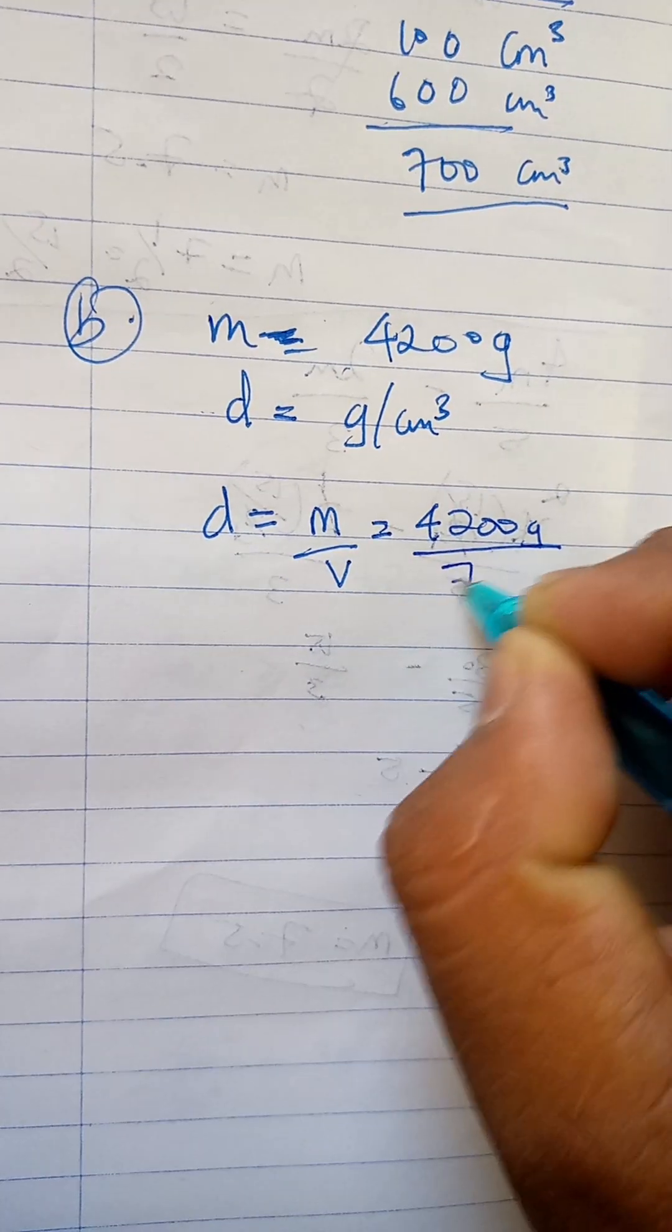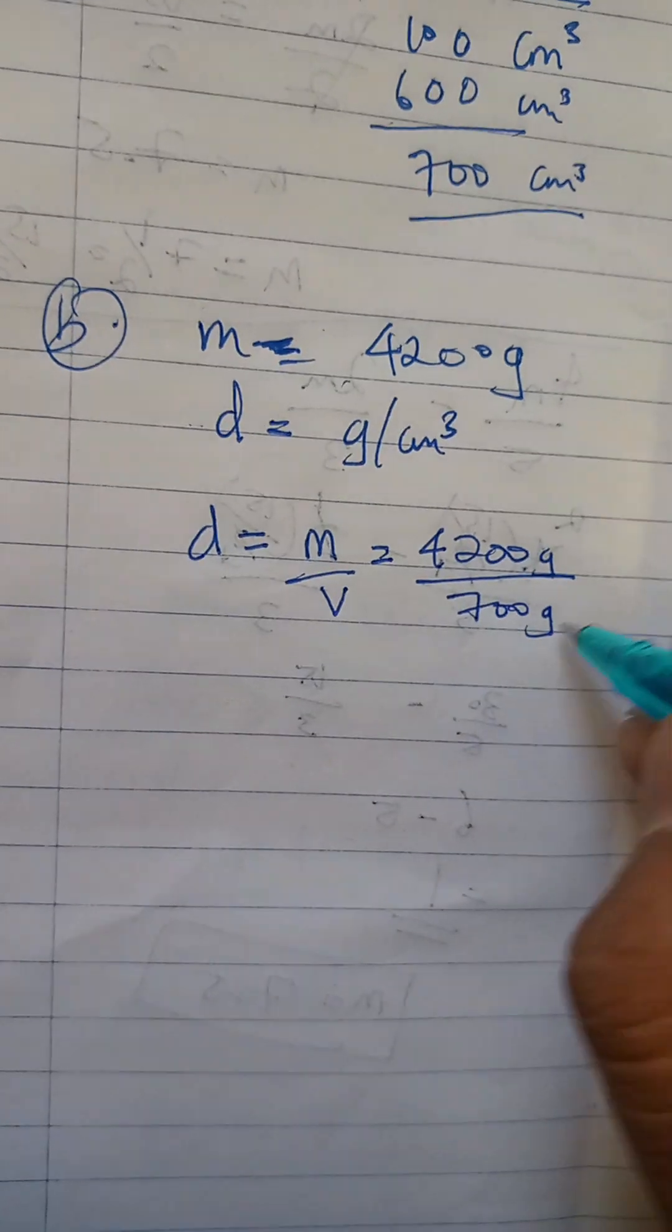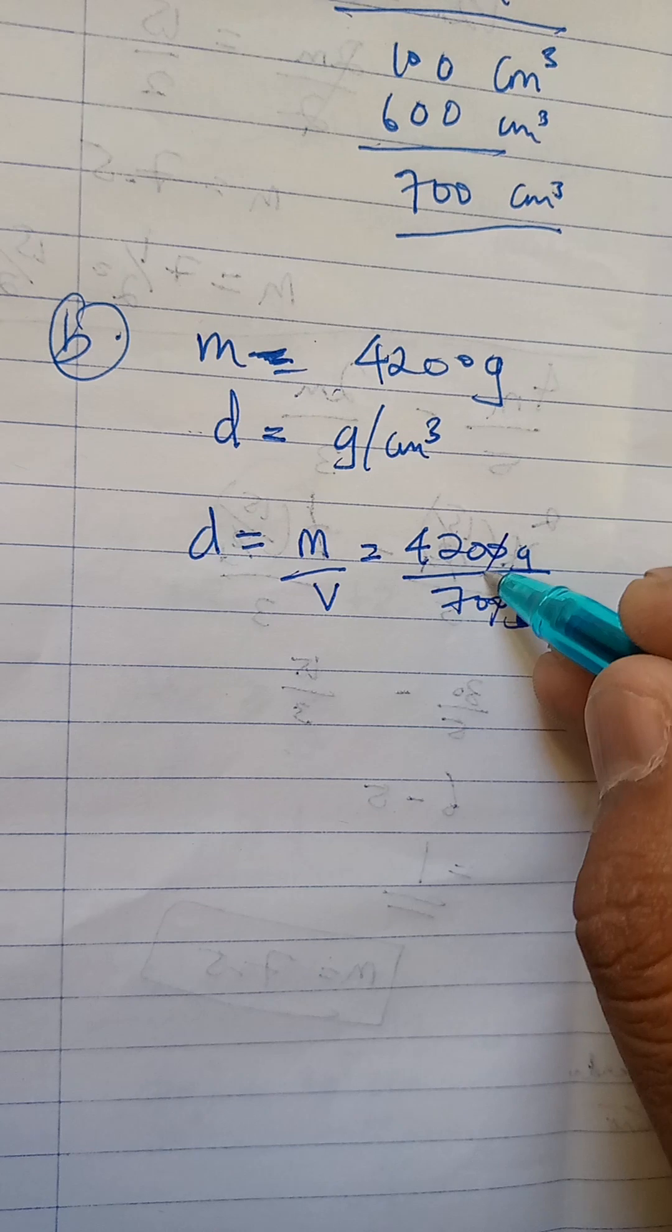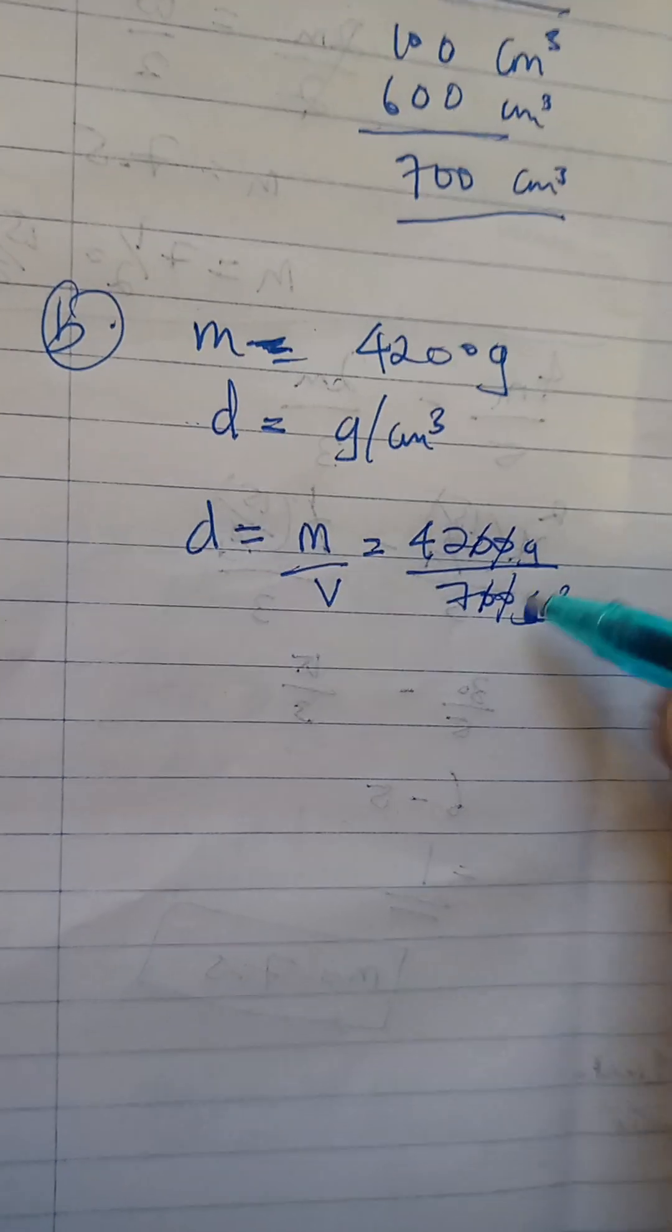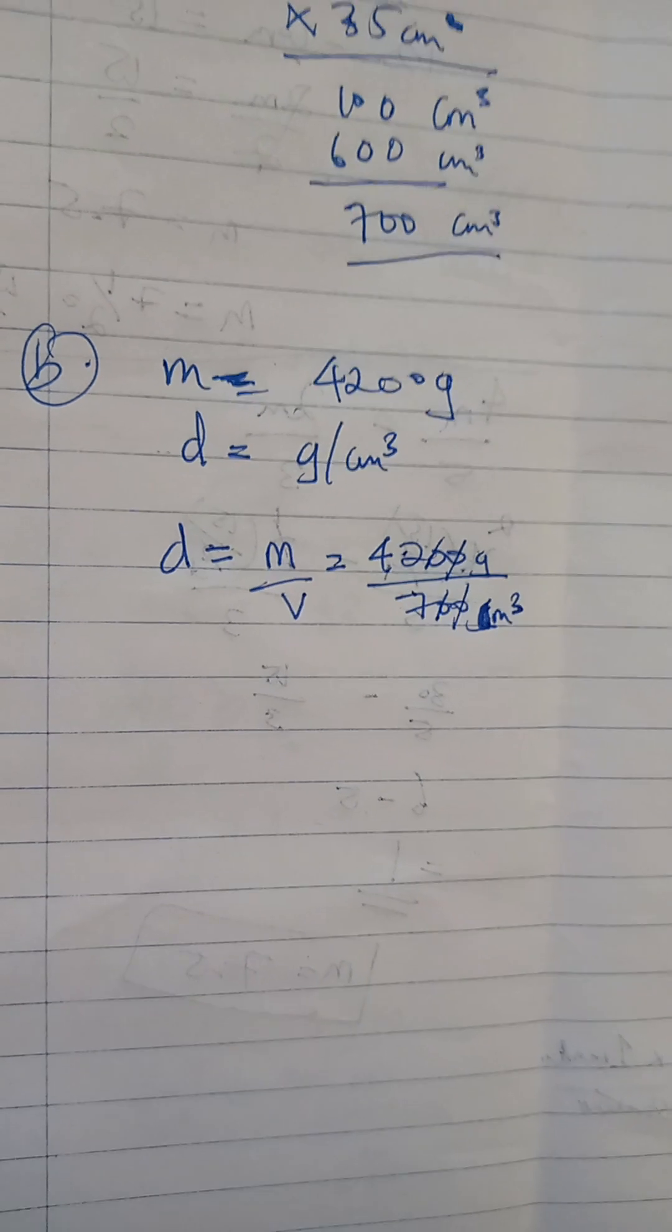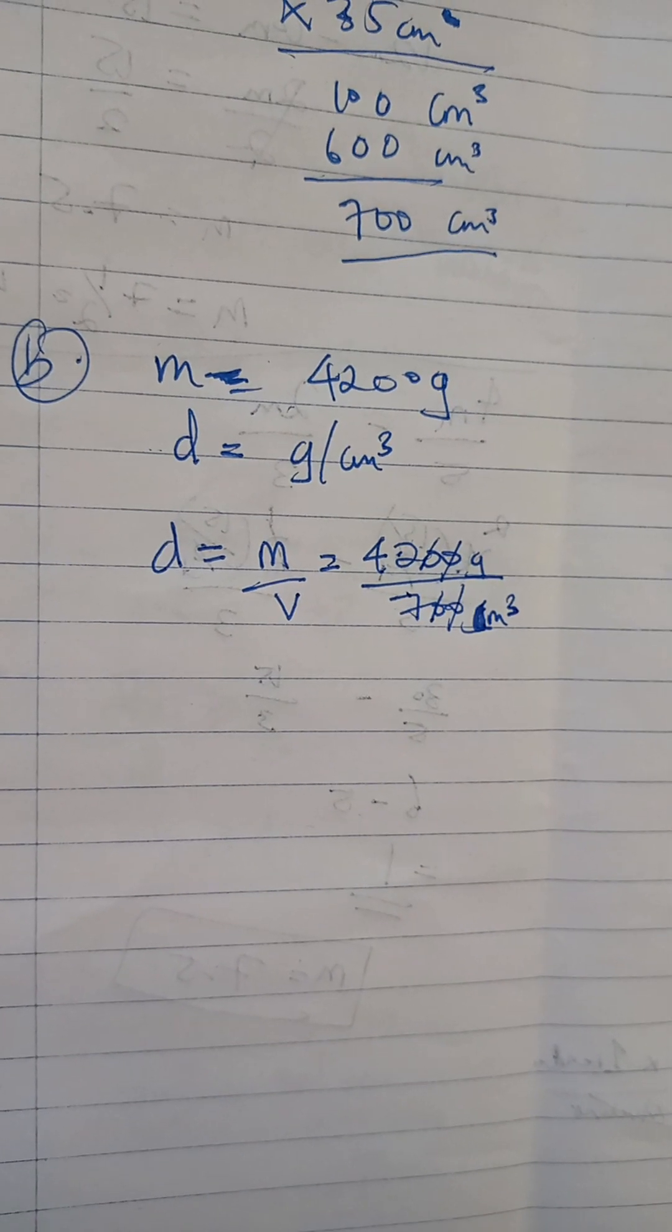So we're gonna do this: 4200 grams divided by 700 cubic centimeters. So these zeros cancel each other out, and then we have to find how many times the 7 goes into 42.